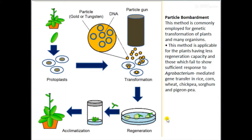This method is used for genetic transformation of plants as well as many organisms. It is particularly applicable for plants having less regeneration capacity and those which fail to show sufficient response to Agrobacterium-mediated gene transfer — for example, in rice, corn, wheat, chickpea, sorghum, and pigeon pea.